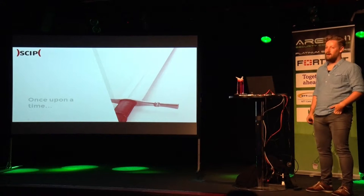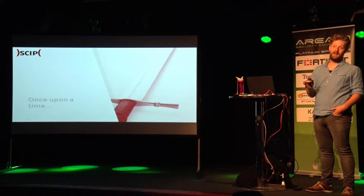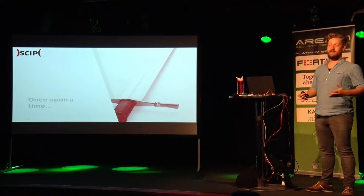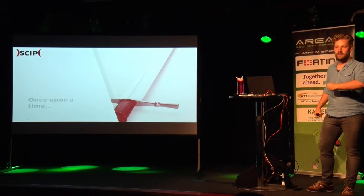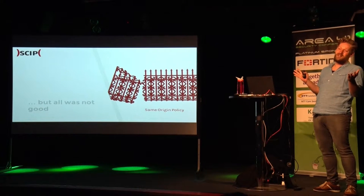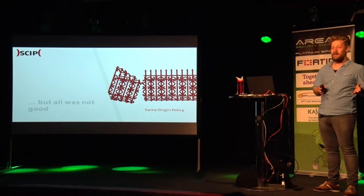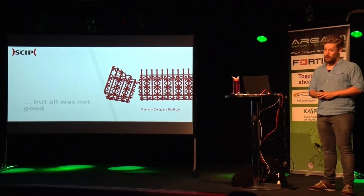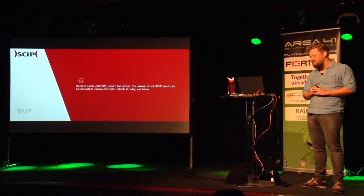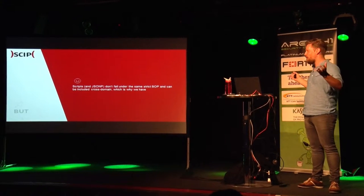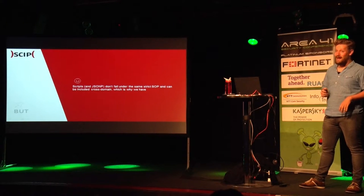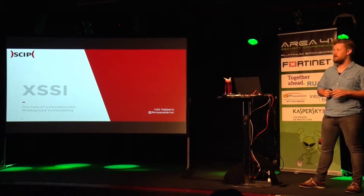Let me tell you a story. Once upon a time, there were browsers, and they were at war, fighting over features. In the kingdom of Netscape, they decided they needed client-side languages, and their knight Brendan Eich came to the rescue — in only ten days, they had JavaScript. But all was not good, because now the local brewery could access data from the king's treasury. To avoid that, they developed the same origin policy. But this doesn't hold for all content types, including scripts and JSONP — they can be included cross-domain. That is why we have cross-site script inclusion, and that was the tale of a famous but widespread vulnerability.